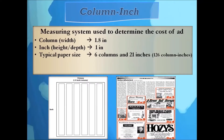So what is a column inch? It is a measuring system that newspaper publishers use to determine the cost of advertising for classified display ads and display ads. The column measures the width and the inch measures the height. A typical newspaper consists of six columns and 21 inches, for a total of 126 column inches. One full page is equivalent to 126 column inches.